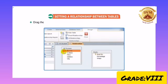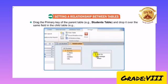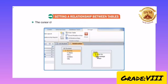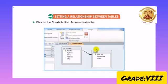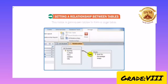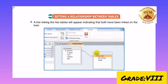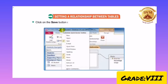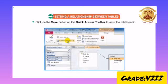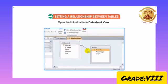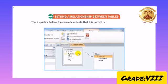Drop the primary key of the parent table, e.g. the student table, and drop it over the same field in the child table, e.g. the marks table. The cursor changes to an arrow and the Edit Relationship dialog box appears. Click on the Create button. Access creates the relationship between the tables. This helps in joining two tables from a large table, reducing data redundancy and data inconsistency. A link between the two tables will appear indicating that both have been linked on the basis of the linked field. Click on the Save button on the Quick Access Toolbar to save the relationship. Open the linked table in the datasheet view. The plus symbol before the records indicates that this record is linked with another table.